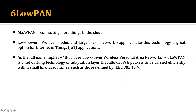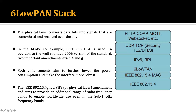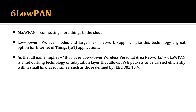The next topic is called 6LoWPAN. The full form is: 6 signifies IPv6, LOW is for low power, and PAN is for Personal Area Network — that is, IPv6 Low Power Personal Area Network protocol. 6LoWPAN is designed to connect more things to the cloud and is very suitable for IoT applications, low power IP-driven nodes, and large mesh network support.